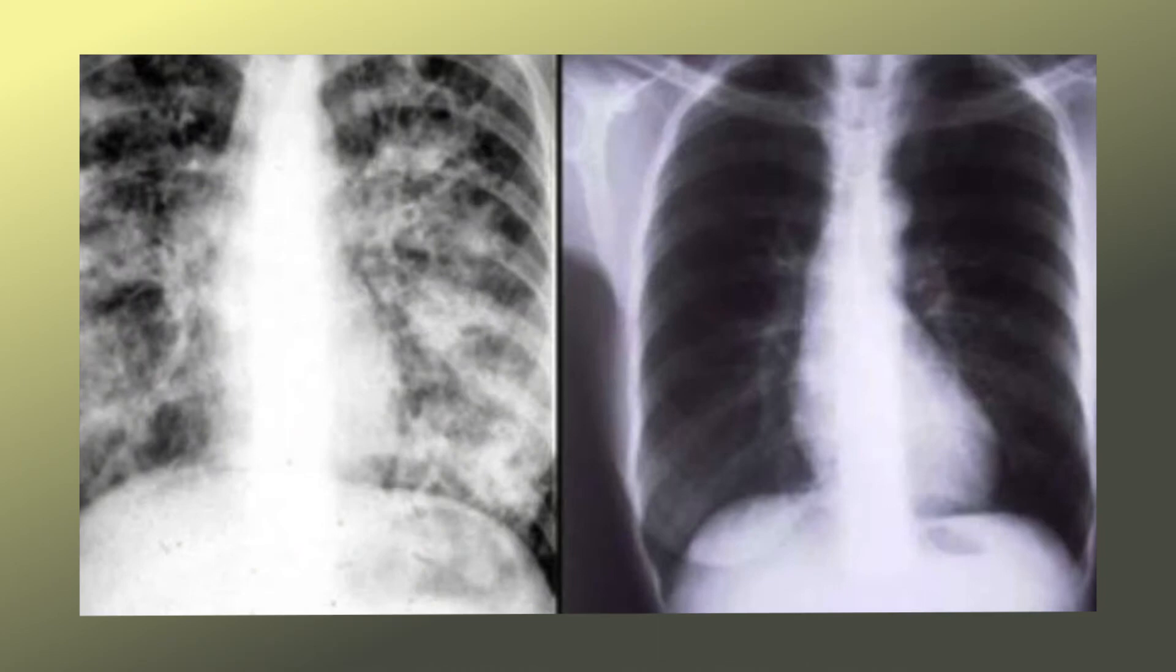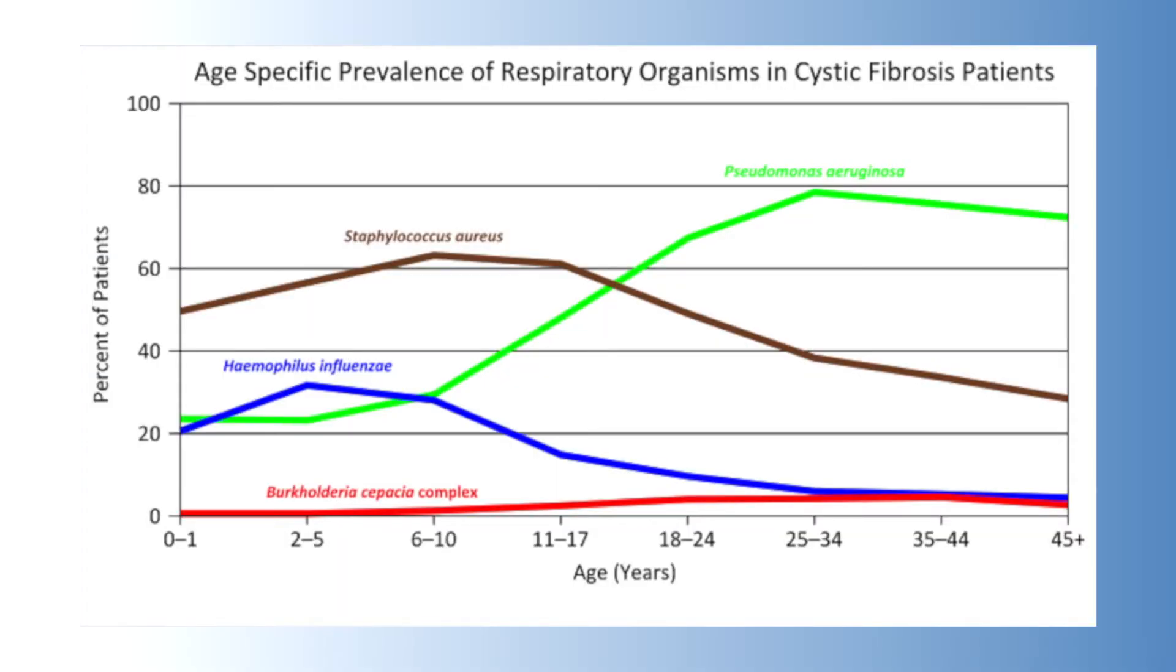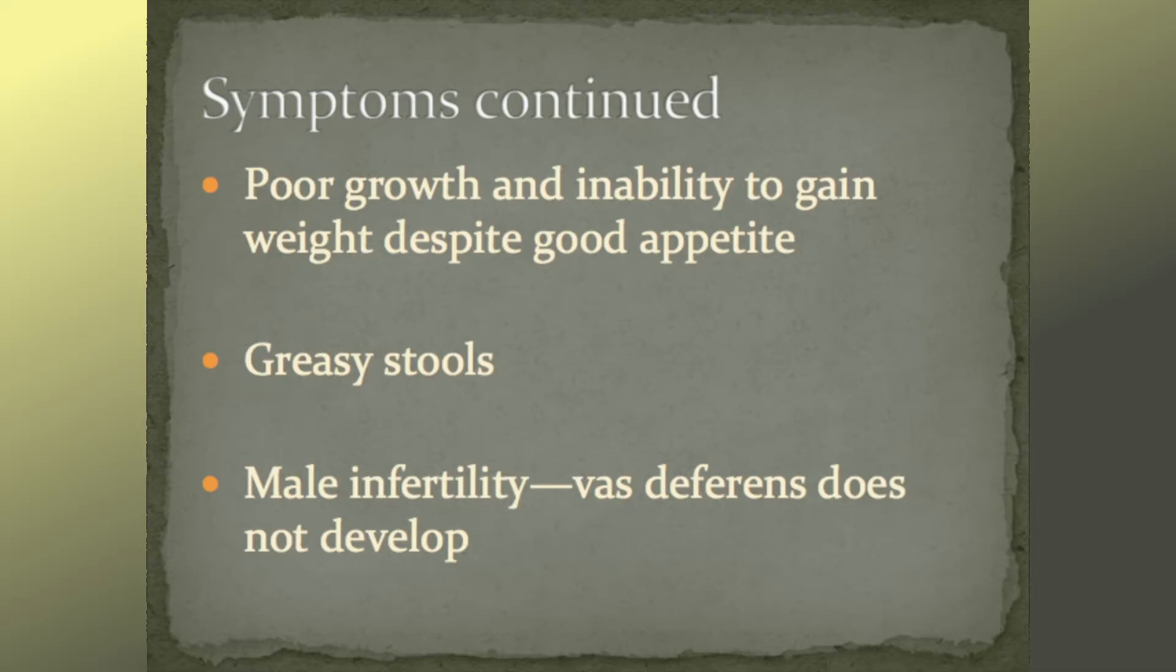Different bacteria infect the lungs during different times of the lifespan, and many bacteria develop antibiotic resistance which can eventually lead to the demise of the patient. Other symptoms include poor growth or the inability to gain weight in spite of good appetite, greasy stools, and male infertility. Often the vas deferens simply do not even develop.